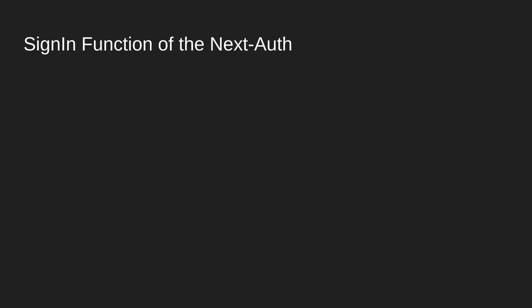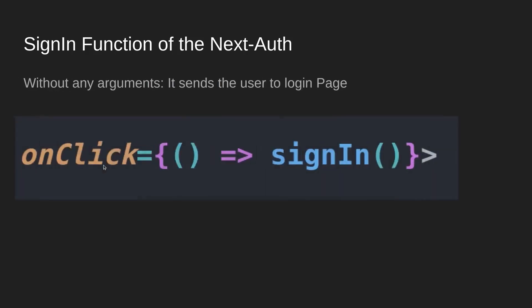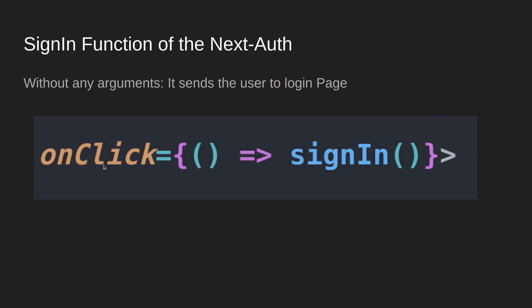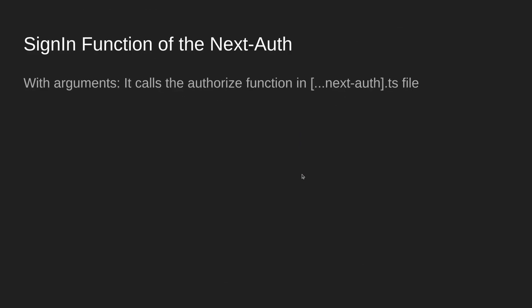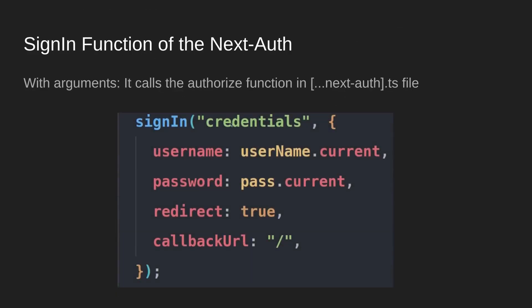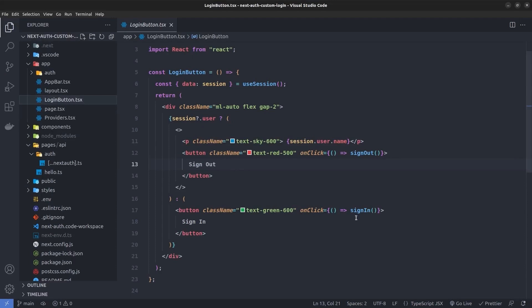Let me talk a bit more about the signIn function of NextAuth. We can call it in two ways: without any arguments, which sends the user to the login page, or with arguments. If we call signIn with the credentials string as the first argument — specifying we're using the credentials provider — and an object containing the username and password as the second argument, it calls the authorize function in the NextAuth config file. In our app bar we call signIn without any arguments, which just sends the user to the login page.